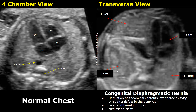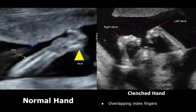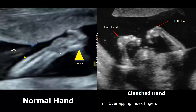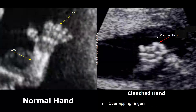A clenched hand is more commonly seen in Edwards syndrome. The hands will appear folded with overlapping fingers and will constantly maintain this position. The normal hand will appear with distinctly visible fingers, thumb, and arm in their normal positions. But in Edwards syndrome they have an abnormal shape and position, with overlapping fingers and a folded hand.